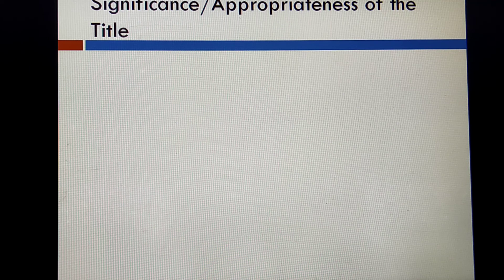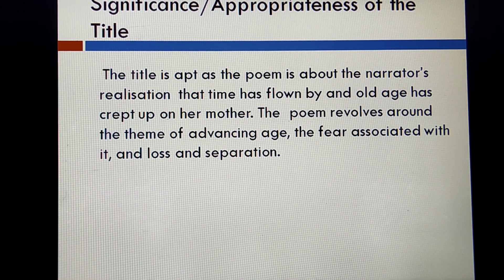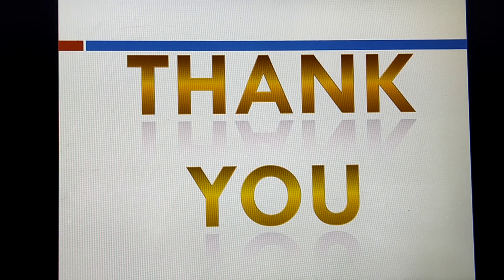Let's move to the last part: the significance, also called the appropriateness of the title. The title is apt as the poem is about the narrator's realization that time has flown by and old age has crept up on her mother. This poem revolves around the theme of advancing age, the fear associated with it, and loss and separation. With this, the explanation of the poem is over. I hope you have understood it in detail. All the best for your further studies, and a big thank you for your time.